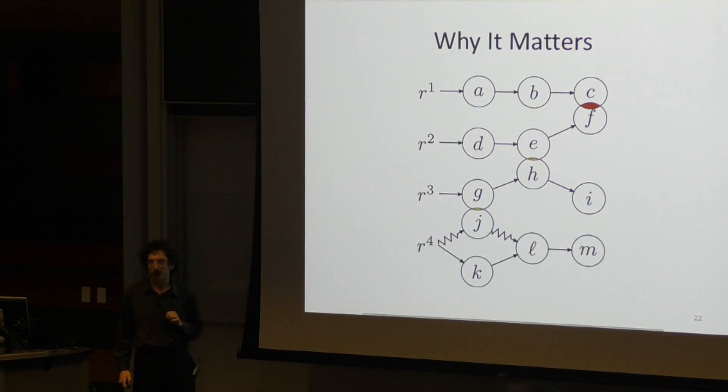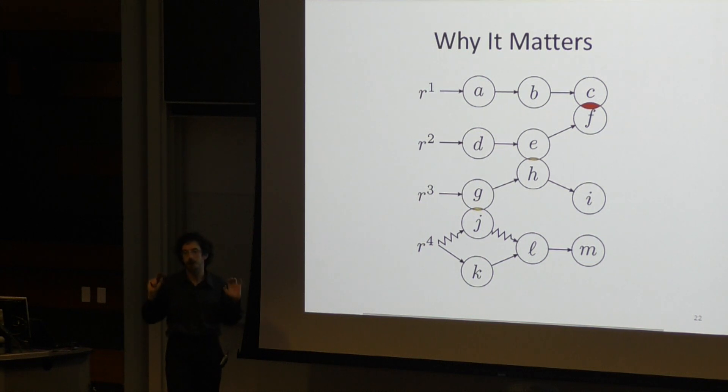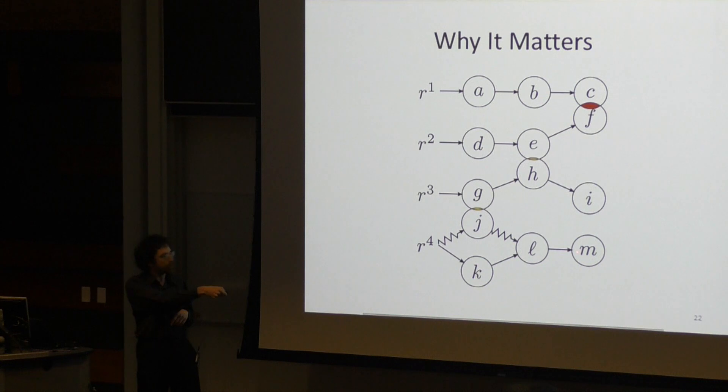Now, imagine adding an additional robot, which has two possible paths. A cheap, safe path through K, and an expensive, unsafe path through J, where there's a 20% chance of colliding with robot three. Any sane MAPF solver would send robot four down this way because it's safe and cheap. However, if you go the expensive route...